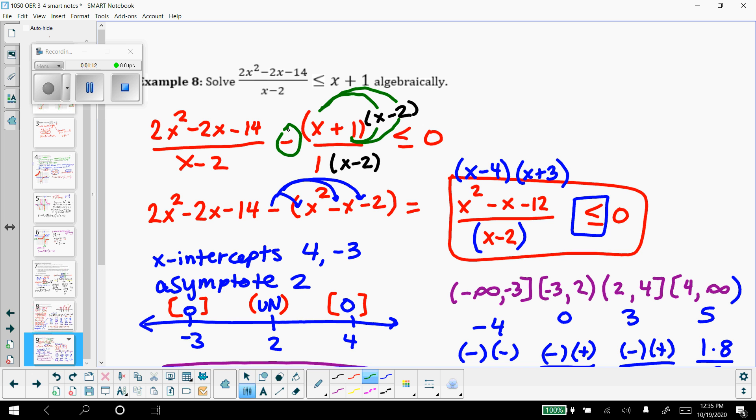2, which is the asymptote that makes the denominator 0, and then 4 and negative 3, which are the x-intercepts that make the numerator 0.